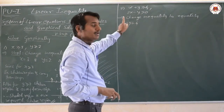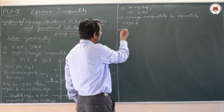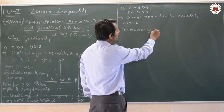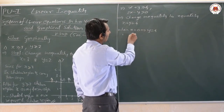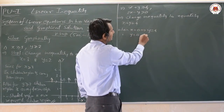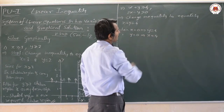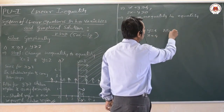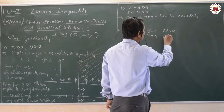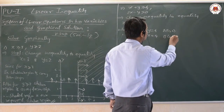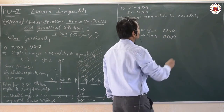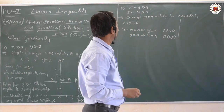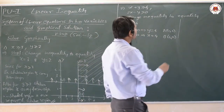For x + y = 4: when x = 0, y = 4; when y = 0, x = 4. So the points are A(0, 4) and B(4, 0).